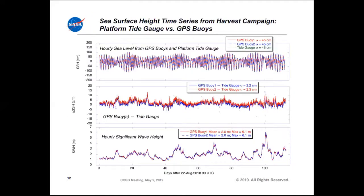Over 100 days, the comparison between the two buoys and the tide gauge shows you can't tell the difference — peak-to-peak variations of two meters from ocean tides, semi-diurnal and diurnal. All systems line up well, with agreement at the two centimeter level in hourly averages. You can see in the bottom panel a significant correlation with significant wave height. The typical wave height at Harvest is a couple of meters, but during occasional periods we're up to over six meters, and at that point the solution starts to break down — there could be sea spray and spume going over the top of the buoy.